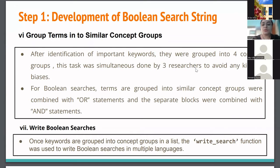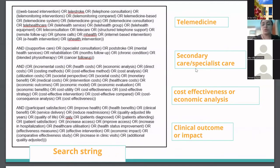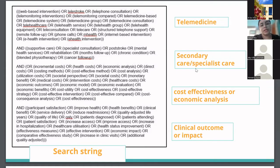Once these keywords were grouped into concept groups, the write_search function was used to write the boolean search in multiple languages — we required English. The concept groups were: telemedicine — including web-based intervention, telemonitoring, teleconsultation; secondary care or specialist care — including supportive care, specialist consultation, post-stroke rehabilitation; cost effectiveness and economic analysis — including incremental cost, health or economic analysis, societal cost; and clinical outcome or impact — including patient satisfaction, improving access, healthcare utilization, and health status improvement.